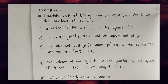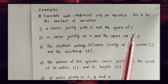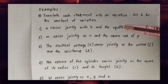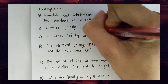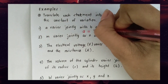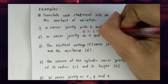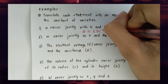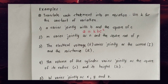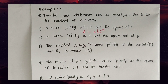First, translate each statement into an equation using k for the constant of variation. Number one: 'a varies jointly with b and the square of c.' Our equation for number one is a = kbc².